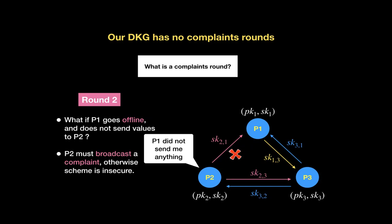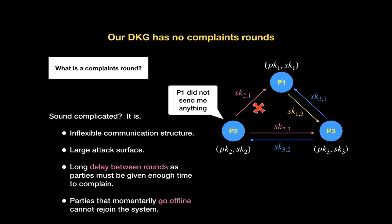What we have to do is engage in a complaints round. Party two broadcasts a complaint, but party three won't initially believe them. Party one has a fixed amount of time to publish the secret key that was supposed to be sent to party two. If they don't send it in time, party one gets eliminated. There are all sorts of ways this becomes difficult to manage. In order to make sure it works, you need a very long delay between rounds, and there is also a large attack surface.